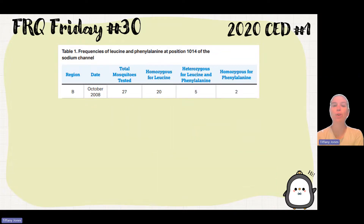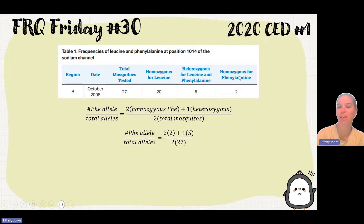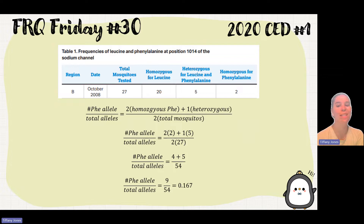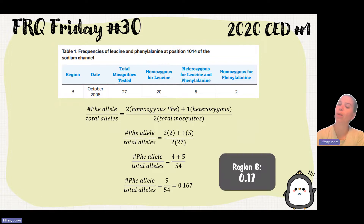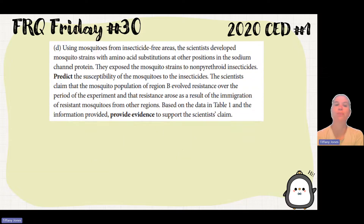For region B, same calculation: two times the number homozygous for phenylalanine, plus the heterozygous count, divided by two times the total mosquitoes. Two times 2 (homozygous) plus 5 (heterozygous), divided by 2 times 27 mosquitoes. That gives (4 + 5) / 54 = 9/54 = 0.167, rounded to 0.17. The scoring guidelines gave a range of 0.16 to 0.17 to account for rounding.